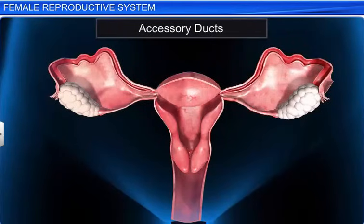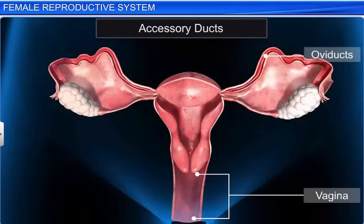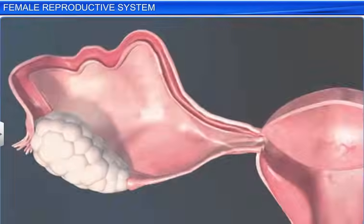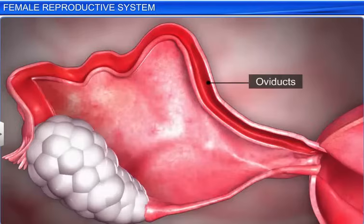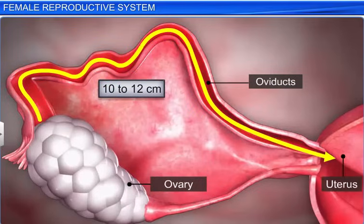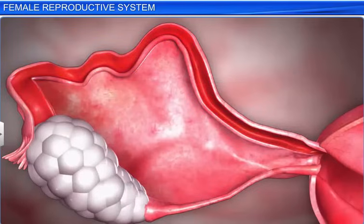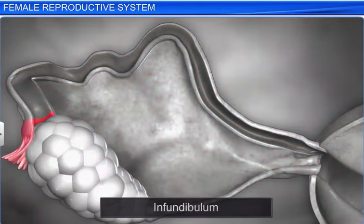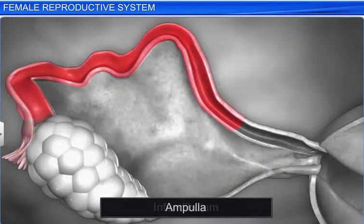The accessory ducts of the female reproductive system are the vagina, oviducts, and the uterus. The pair of oviducts, or fallopian tubes, is about 10 to 12 centimeters long, and extends from the periphery of each ovary to the uterus. Each oviduct is differentiated into 3 parts, namely the infundibulum, ampulla, and isthmus.